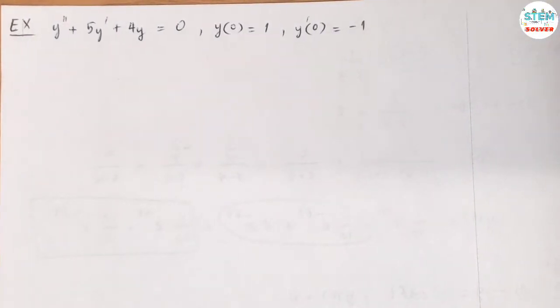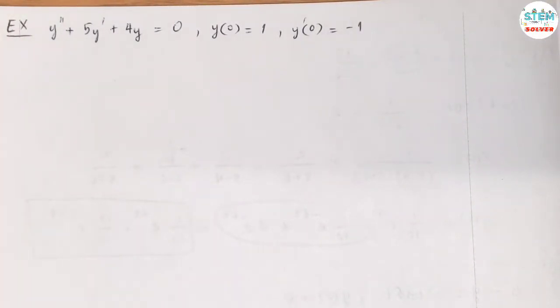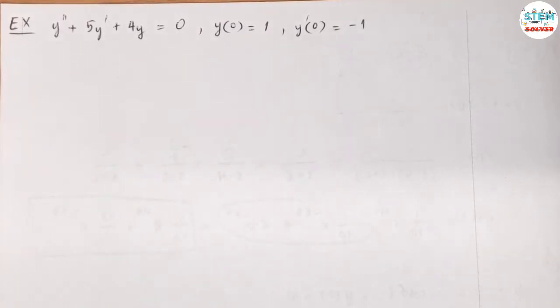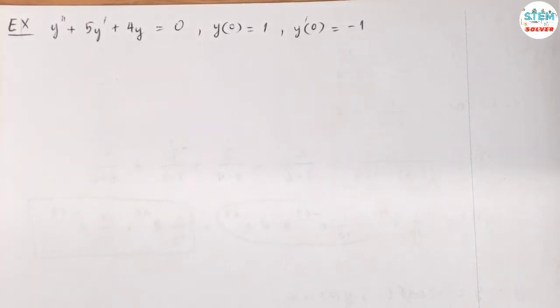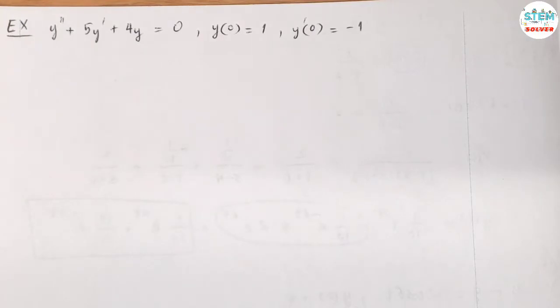Using the Laplace transform theorem to solve the initial value problem: y'' + 5y' + 4y = 0, and you are given y(0) = 1, y'(0) = -1.